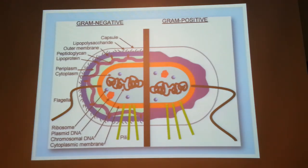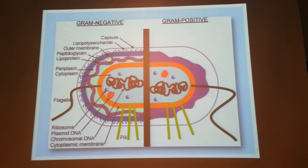An advantage of gram-negative bacteria is that you can recover proteins in the periplasmic space — the space between the membranes. In gram-positive bacteria there is no equivalent compartment. Although you could direct the protein to be secreted into the culture medium, in a 1-litre culture the protein would be diluted throughout the medium and also exposed to proteases that would degrade it.